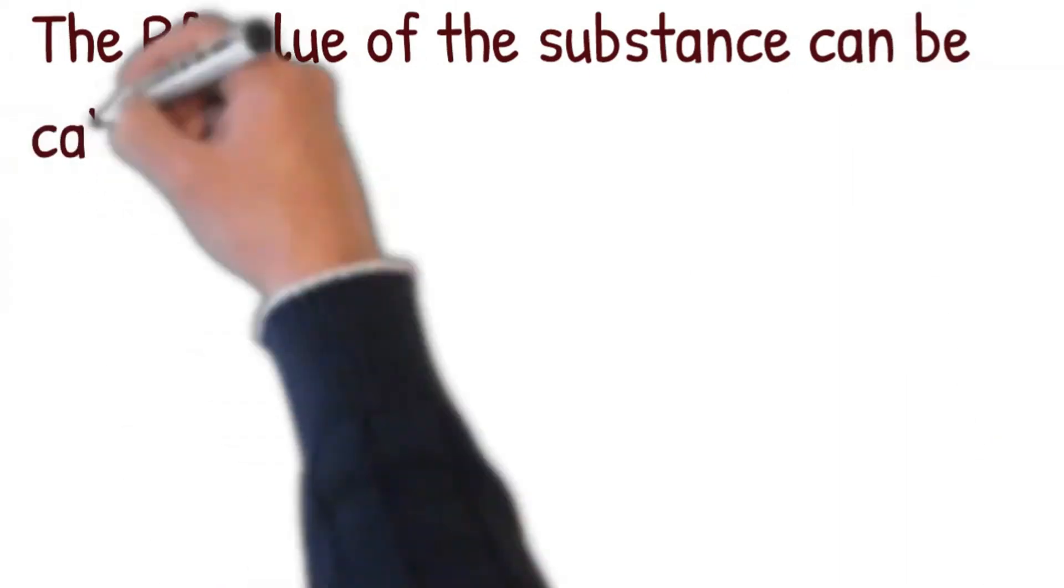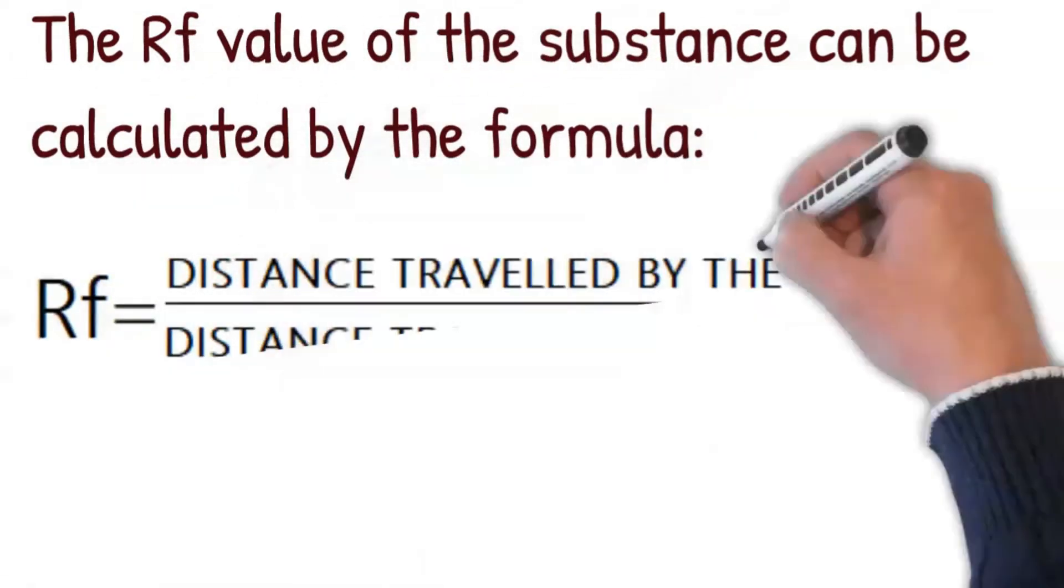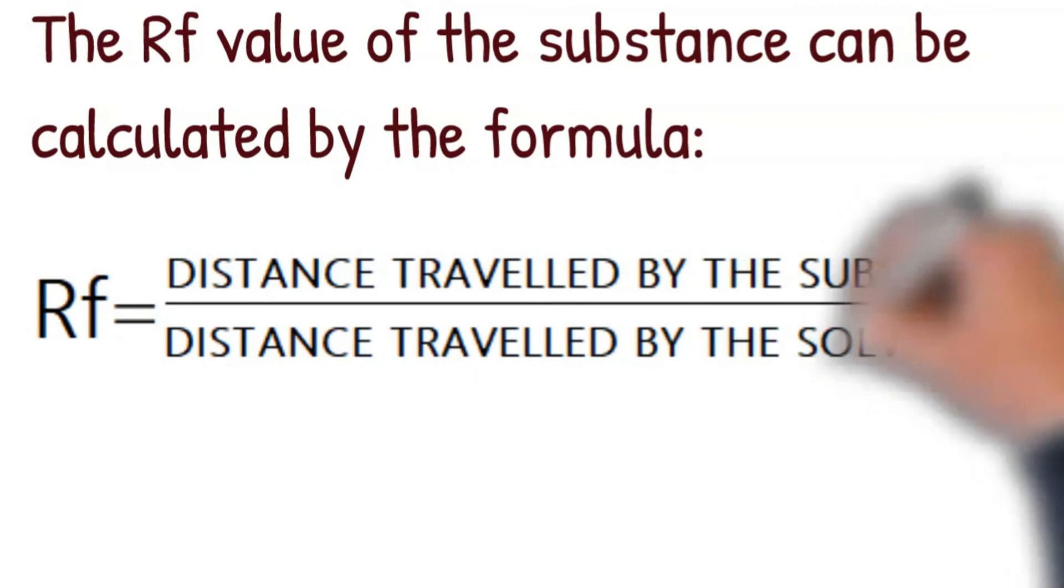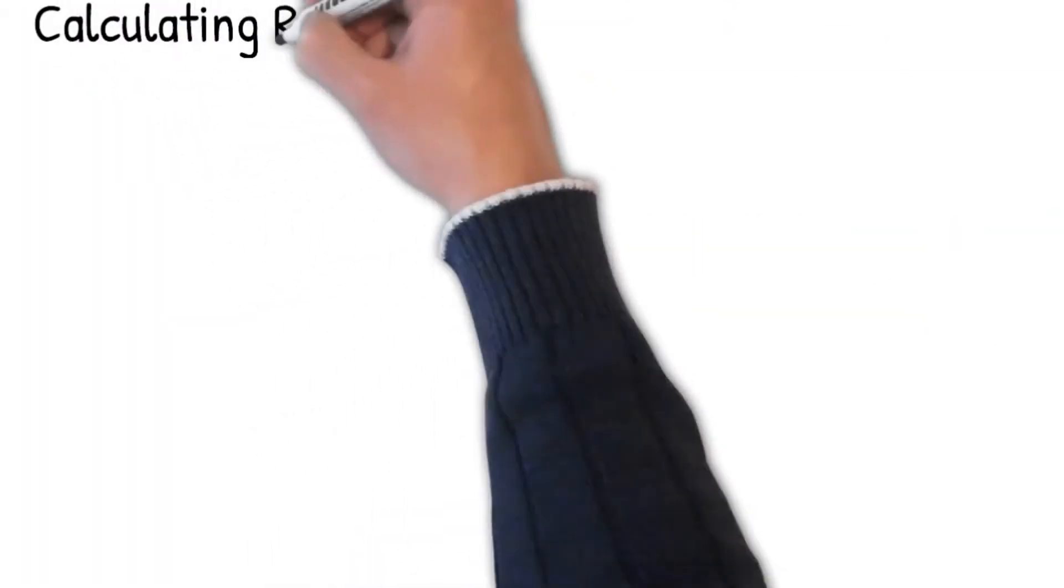The RF value of the substance can be calculated by the formula: distance traveled by the substance divided by distance traveled by the solvent.